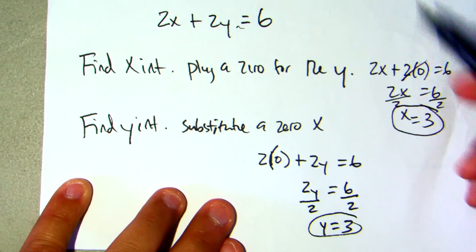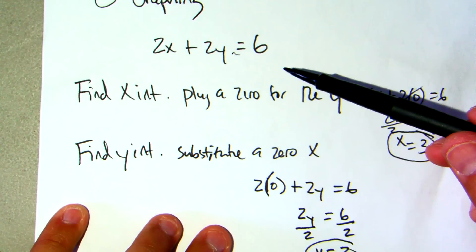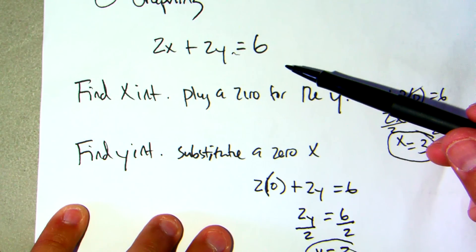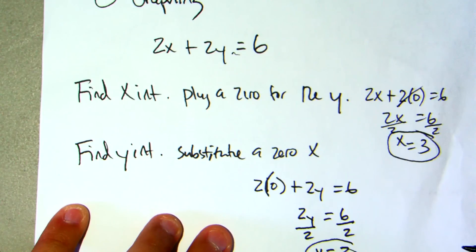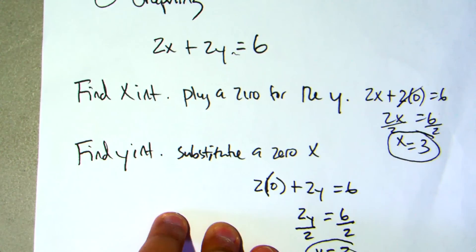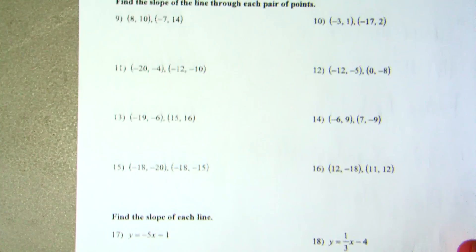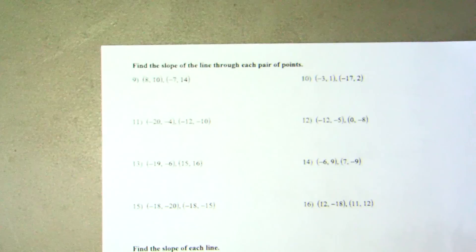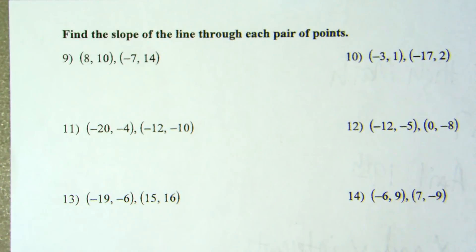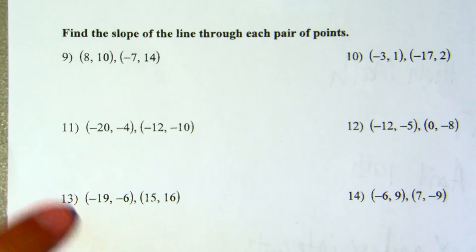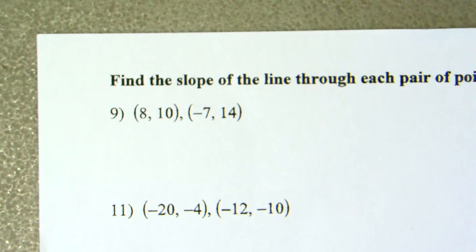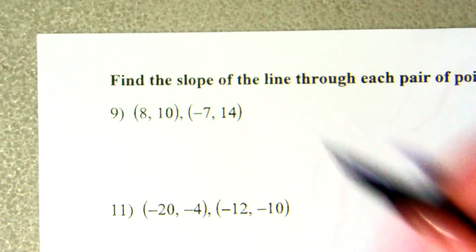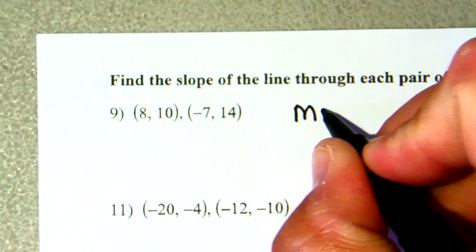So the x-intercept was 3 and the y-intercept was 3 on that one. You do not have to put it into the equation of a line — just plug in zero for the opposite variable. That's section one, which is fairly easy. Now section two is finding slope. I can ask it in one of two ways: I can say find the slope of the line passing through each pair of points.